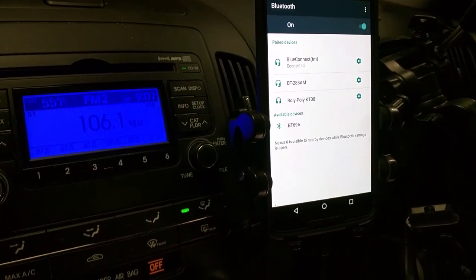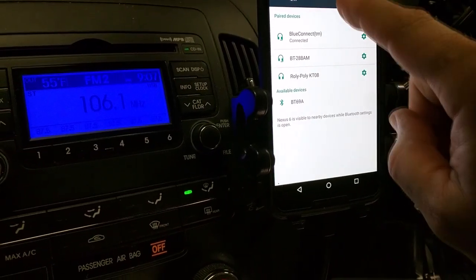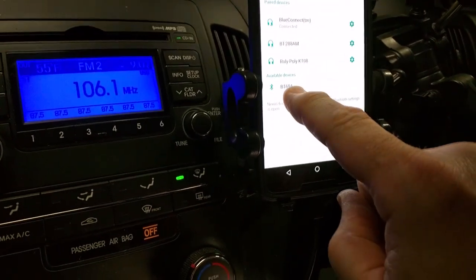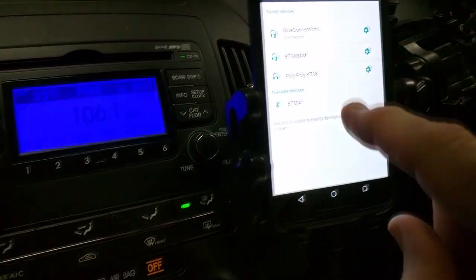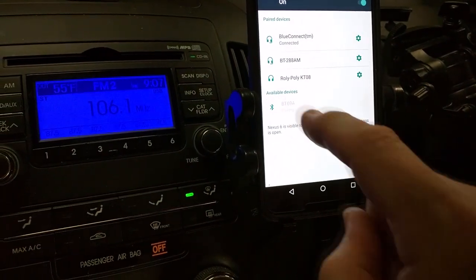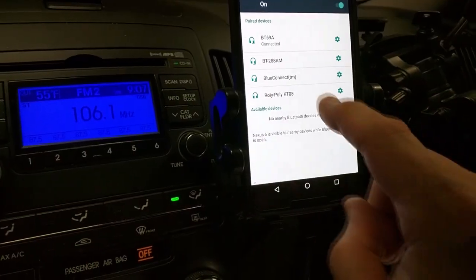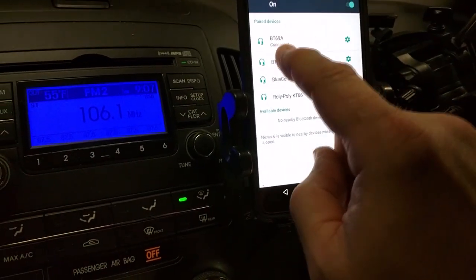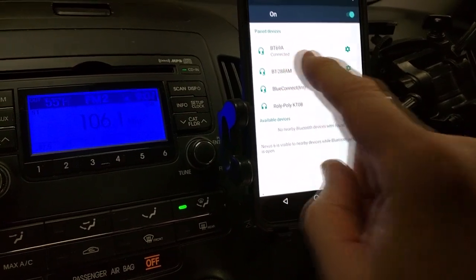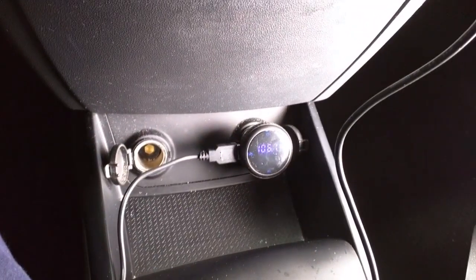So the next thing I'm going to try is to connect to the Bluetooth. And I have my Bluetooth enabled. And I see a device BT69. Let's connect to that. So it shows that it's now connected. Now we should be able to stream music from the cell phone to the device.